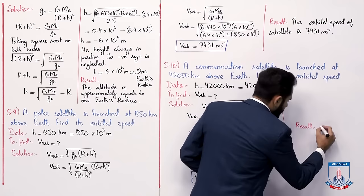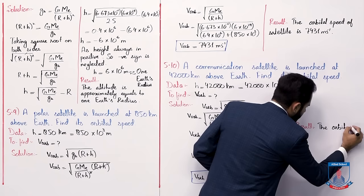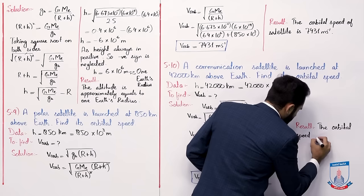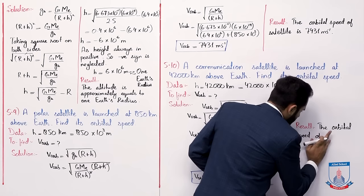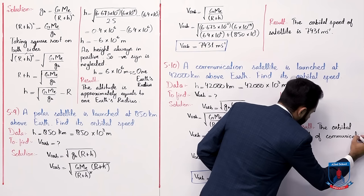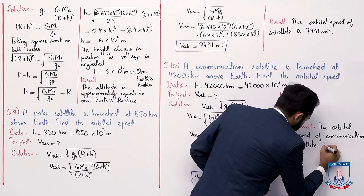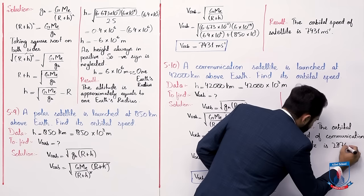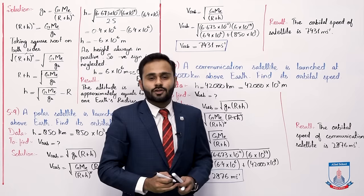The orbital speed of the communication satellite is 2,876 meter per second. I hope these numericals are clear. Take care, Allah Hafiz.